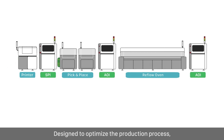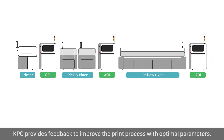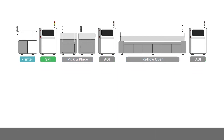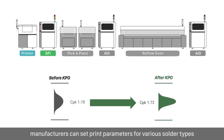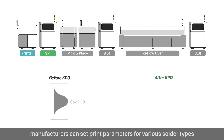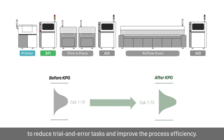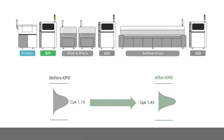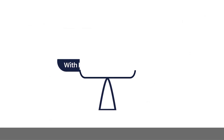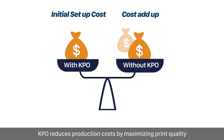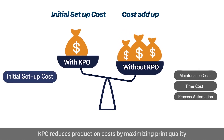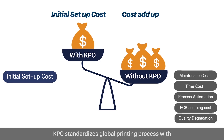Designed to optimize the production process, KPO provides feedback to improve the print process with optimal parameters. With KPO, manufacturers can set print parameters for various solder types to reduce trial-and-error tasks and improve process efficiency. KPO reduces production costs by maximizing print quality and reducing the total cost of ownership. KPO standardizes the global printing process with a revolutionary rate of quality improvement.